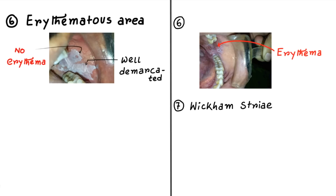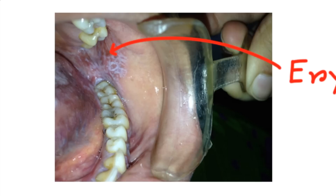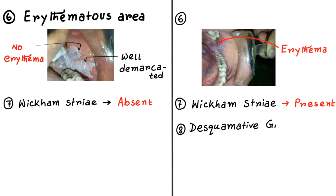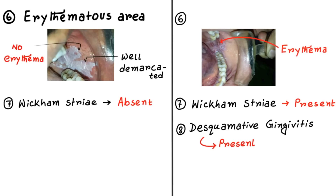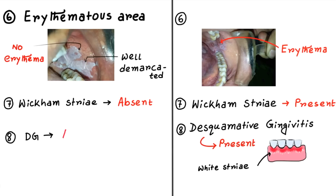The next differentiating point is Wickham's Striae. Mostly it is seen on skin lesions, but you can also find it in the oral cavity. Here you can see fine white lace-like striae. This is a typical feature of Lichen Planus, but it is absent in Leukoplakia. If the gingiva is involved, sometimes you can find desquamative gingivitis. But remember, desquamative gingivitis is a generalized feature and can be seen in other diseases also, so try to find Wickham's Striae. If Wickham's Striae is present with desquamative gingivitis, you can go for Lichen Planus. Wickham's Striae is absent in Leukoplakia.